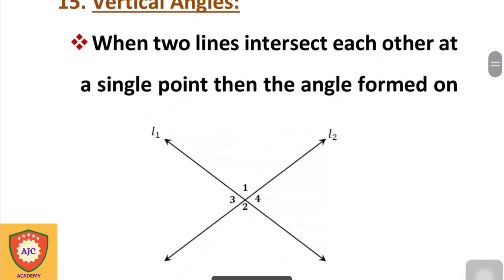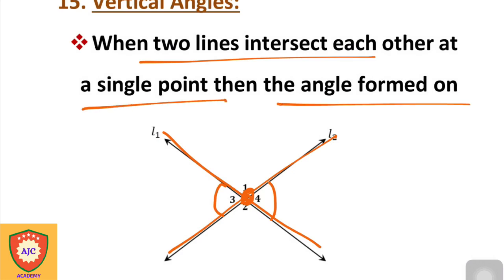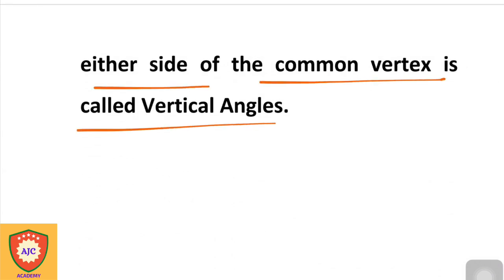The next type is the vertical angle. When two lines intersect each other at a single point, the angles formed on either side of the common vertex are called vertical angles. This is the definition of a vertical angle.